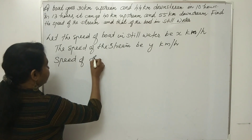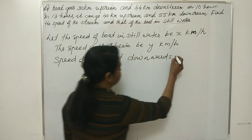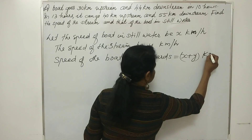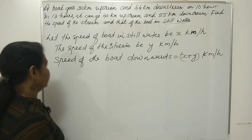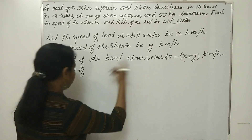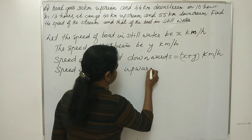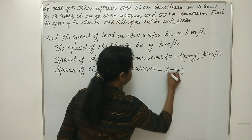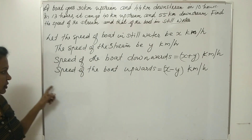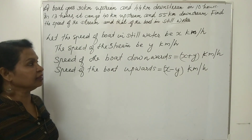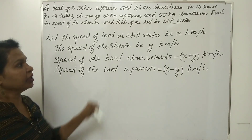So the speed of the boat downstream is equal to x plus y km/h, and the speed of the boat upstream is equal to x minus y km/h. We have defined the variables. This is the first case. Time taken equals 30 km upstream and 44 km downstream, and the total time taken is 10 hours.